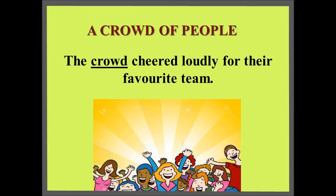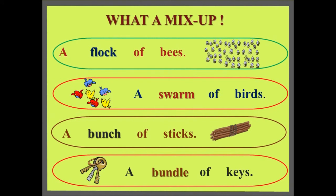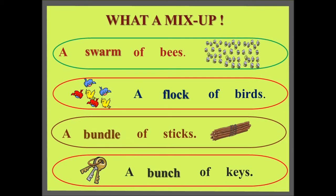We have seen a lot of examples of collective nouns. Now let us do some revision. Look at this mix up: A flock of bees, a swarm of birds, a bunch of sticks, a bundle of geese — something is wrong here. Can you tell the correct collective nouns? Let's see: A swarm of bees, a flock of birds, a bundle of sticks, a bunch of geese. Now this seems right!